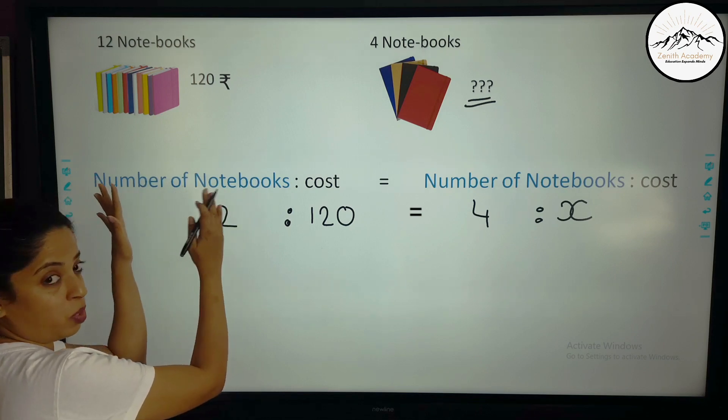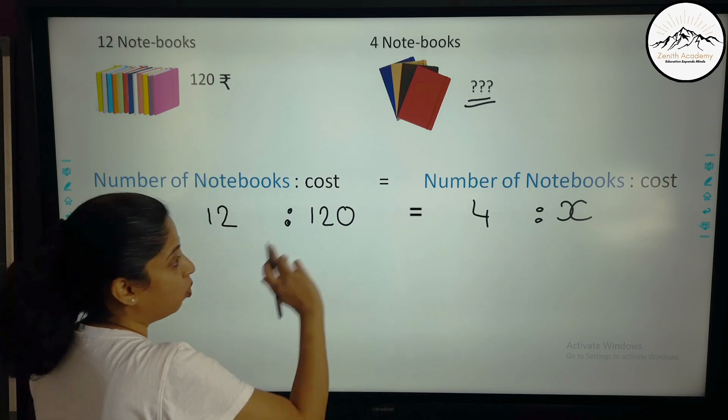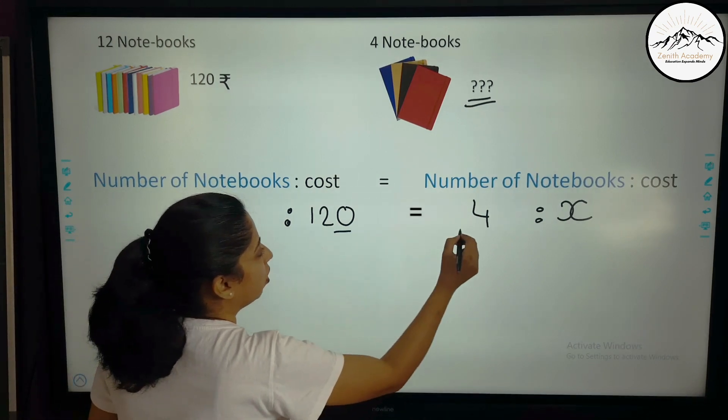Now always remember if you have taken number of books here on the left hand side, you should take in the other ratio also left hand side. Don't change the order.